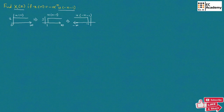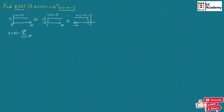Now, using this analysis, let us solve the problem. We know X of Z can be written as summation of N is equal to minus infinity to infinity of X of N, Z to the power of minus N. In place of X of N, let us substitute minus alpha to the power of N, U of minus N minus 1.